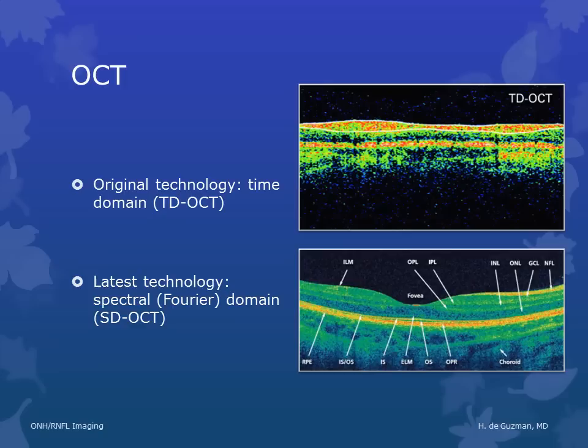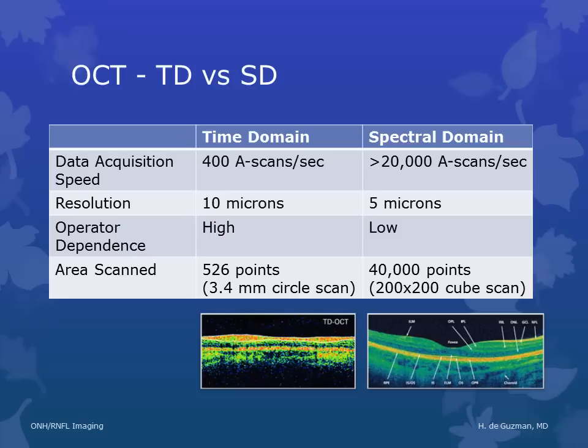The original OCT technology was called time-domain technology, but the latest technology is the spectral or Fourier domain technology, or SDOCT. Time-domain OCT is slower and has a lower resolution, and it's much more operator-dependent compared to spectral domain OCT. The area scanned also provides much more information for the spectral domain OCT, so it is a superior technology to the time domain by a wide margin.